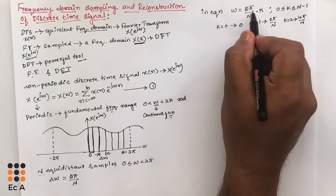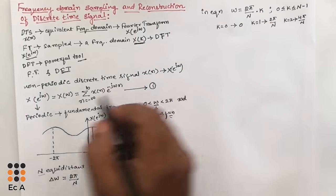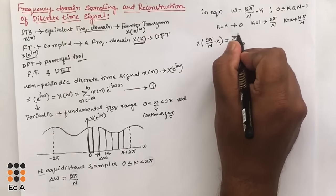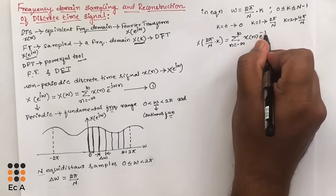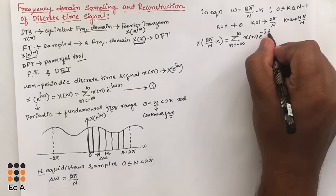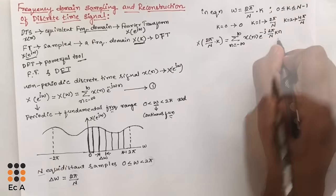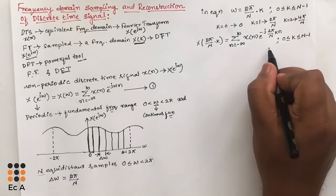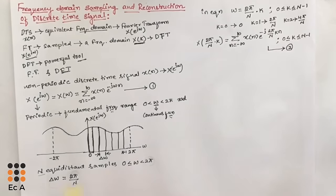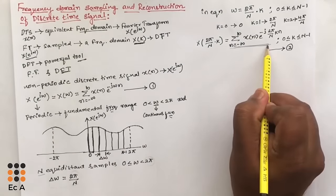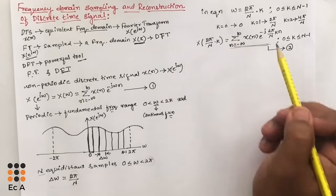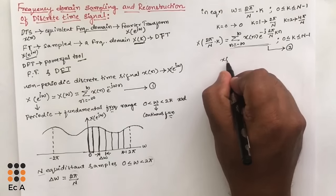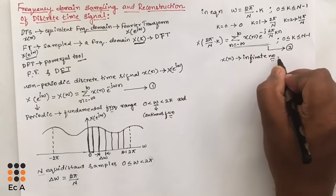If we replace omega with 2 pi by N into k in equation 1, we can write x of 2 pi by N into k equals summation from n equals minus infinity to infinity of x of n times e to the power of minus j times 2 pi by N times k times n, for k ranging from 0 to N minus 1. Call this equation number 2. Observing this equation, the summation runs from minus infinity to infinity, meaning x of n has an infinite number of summation terms.